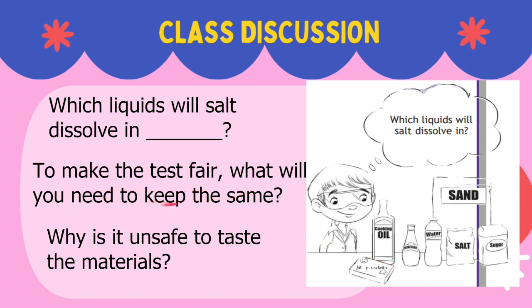To make the test fair, what will you need to keep the same? The boy could do research to find the answer, but because he has all the materials he can do a fair test. Follow this simple set of instructions: change one thing, measure one thing, keep the rest the same. Draw a diagram to show how you will complete the test and use labels to show how you will make it a fair test. When writing sentences to record your results, use the words soluble and insoluble.